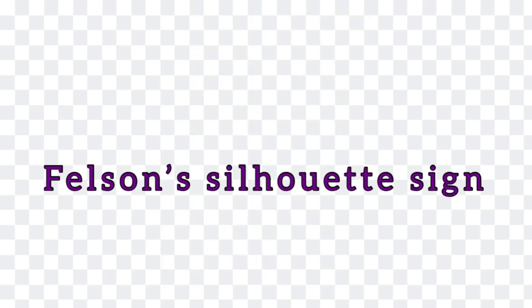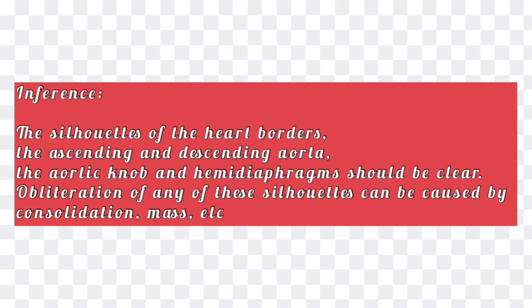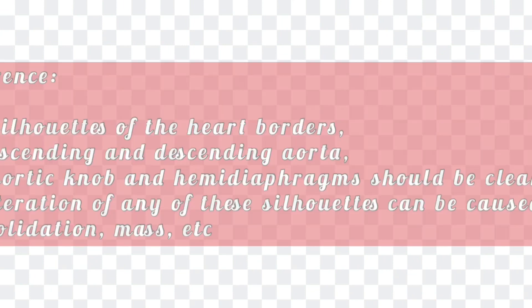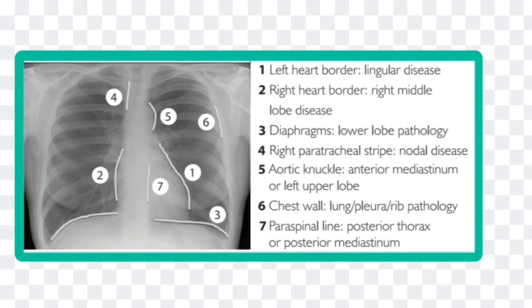Before we start seeing some abnormal chest x-rays, let me tell you an important sign that is very helpful to localize a lesion — this is called the Silhouette sign. It states that an intrathoracic radio-opacity, if it is in anatomical contact with a border of the heart, diaphragm, or aorta, will obscure that border.